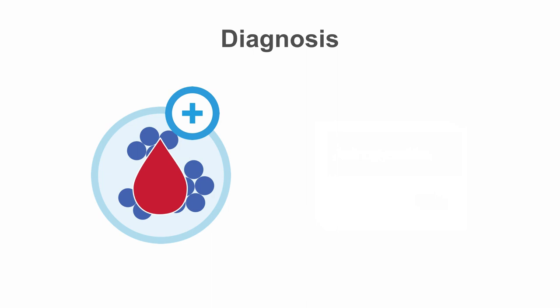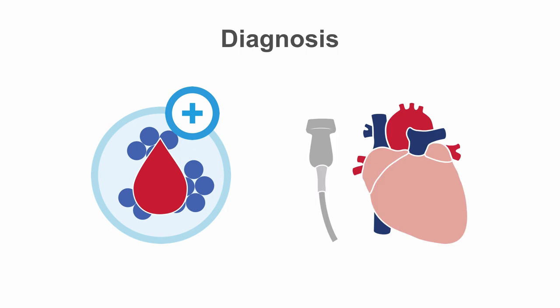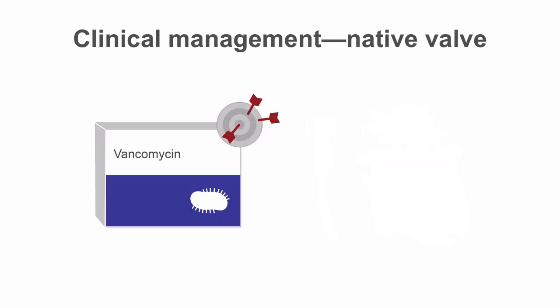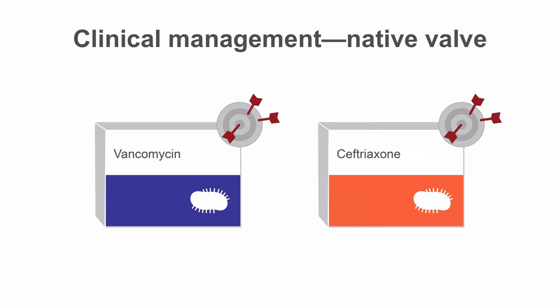Diagnosis is confirmed by multiple positive blood cultures and visible vegetations noted on echocardiography. Definitive management is best accomplished by an infectious disease specialist, and the nuances of antimicrobial therapy are beyond the scope of this lesson. However, while awaiting culture results, empirical therapy of native valve infective endocarditis with vancomycin plus ceftriaxone is recommended.